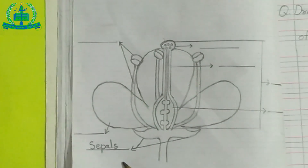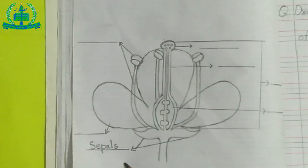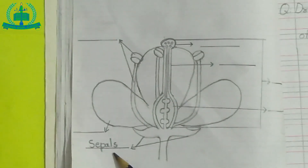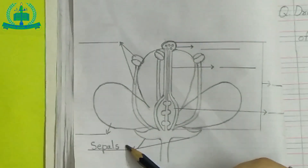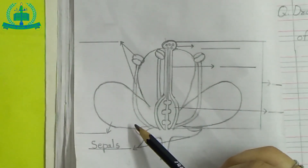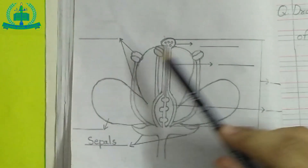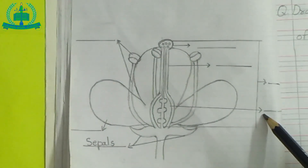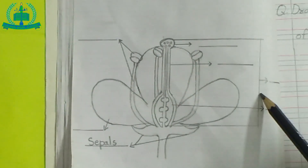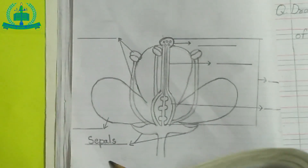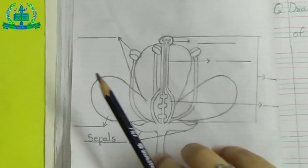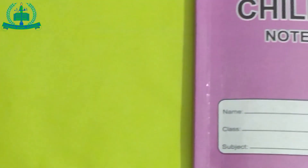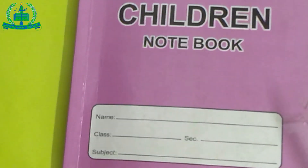I label the first part of the flower — this is called sepal. Now it is your turn to label the other parts of the flower by yourself. You can take help from the book, page number two. This is the end of today's lecture. Please complete your homework before the next lecture.